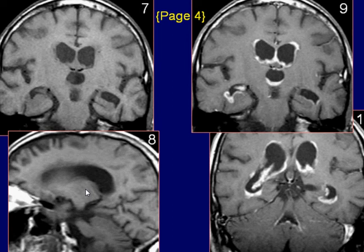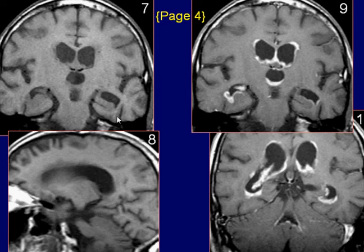T1-weighted images reveal dilated lateral and third ventricles. There are subtle periventricular hypo-intense areas.